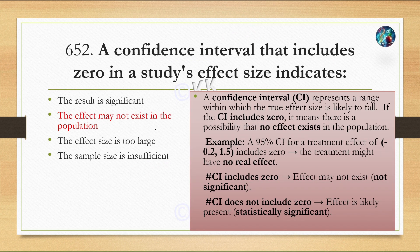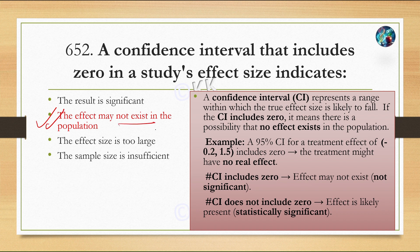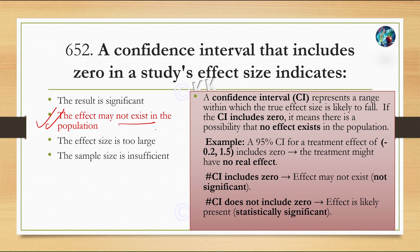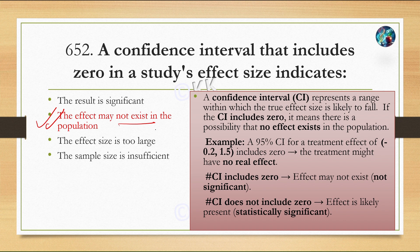Confidence interval represents a range within which the true effect size is likely to fall. If the confidence interval includes zero, it represents that there is a possibility that no effect exists in the population. If the confidence interval does not include zero, it represents a statistically significant value.